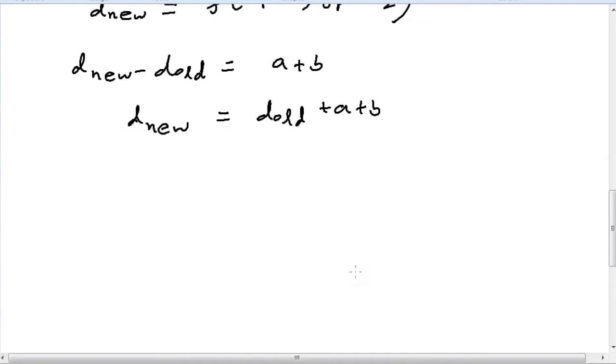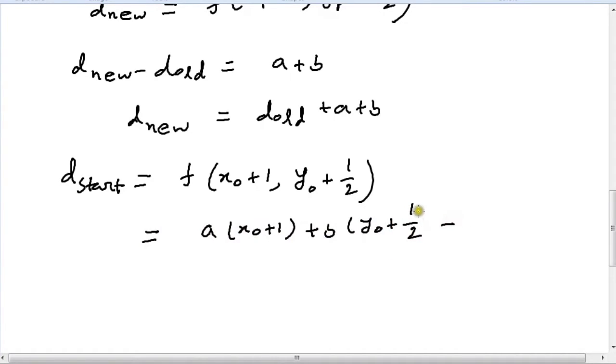And of course we can calculate the initial d, d_start. The initial d_start will be equal to f(x0 plus 1, y0 plus half), obviously because x0, y0 is the first pixel we'll be glowing. And this gives us a(x0 plus 1) plus b(y0 plus half) plus c.